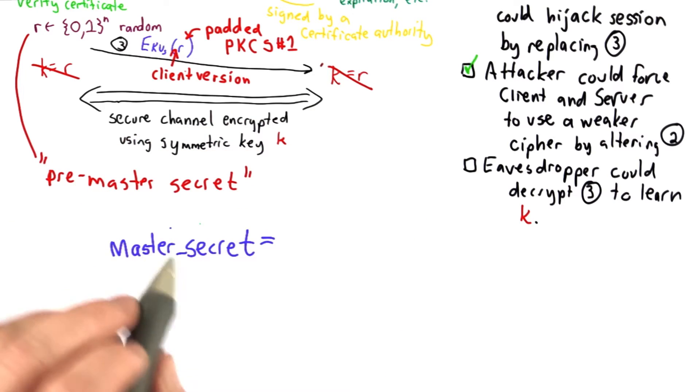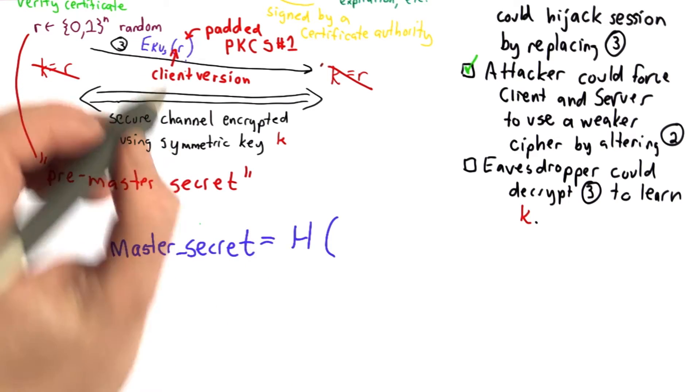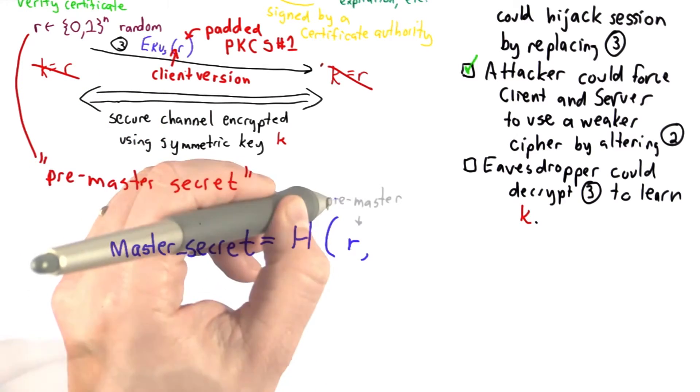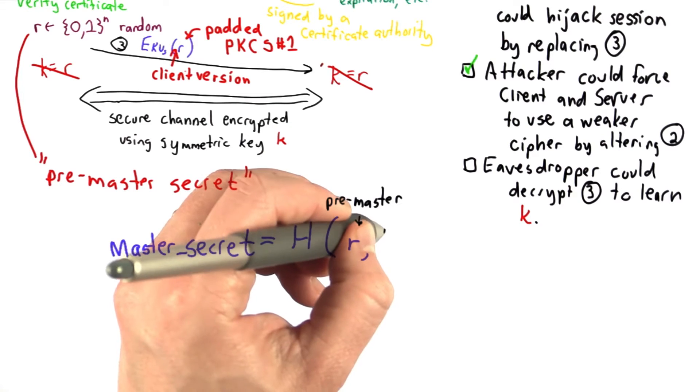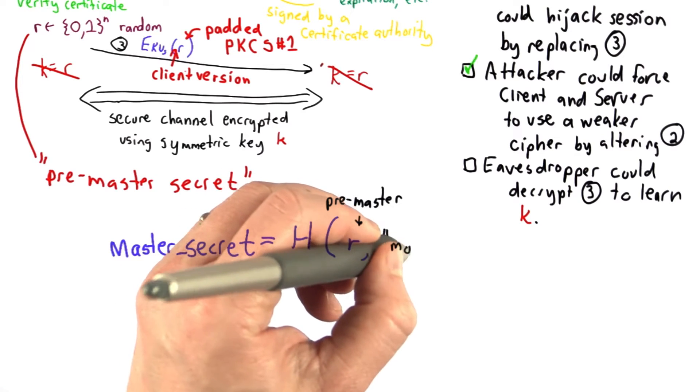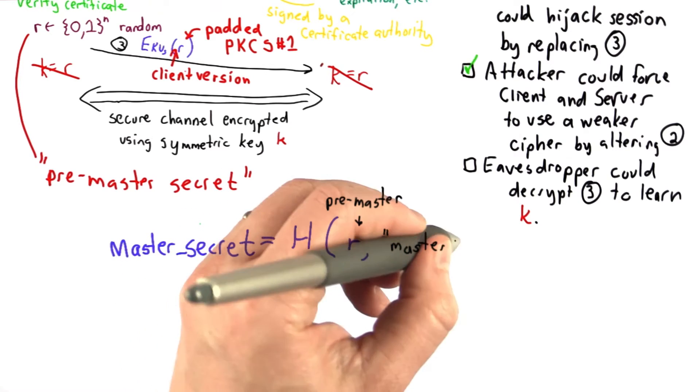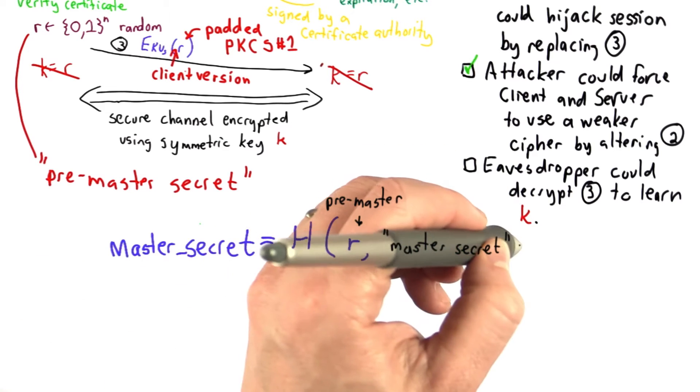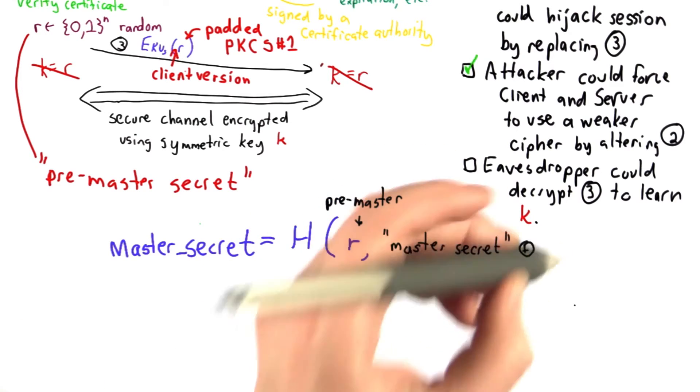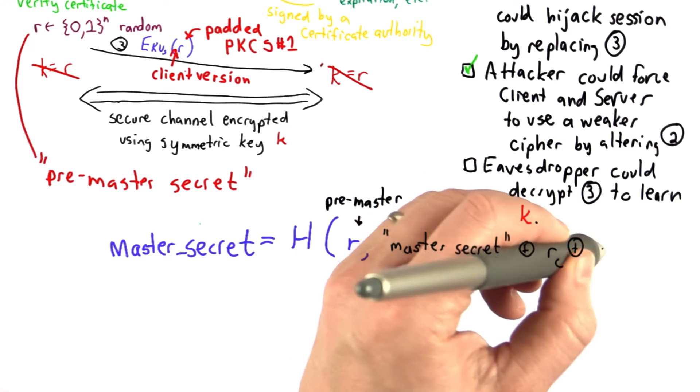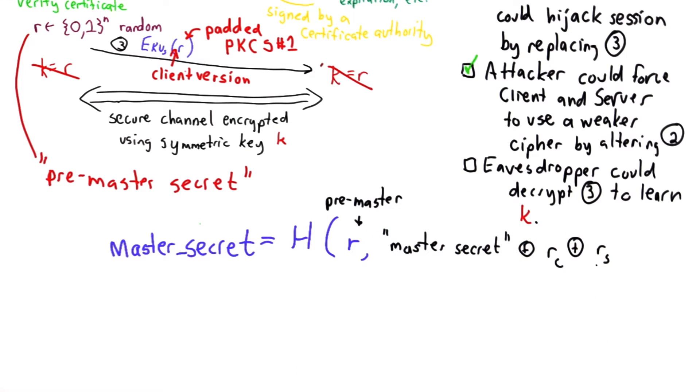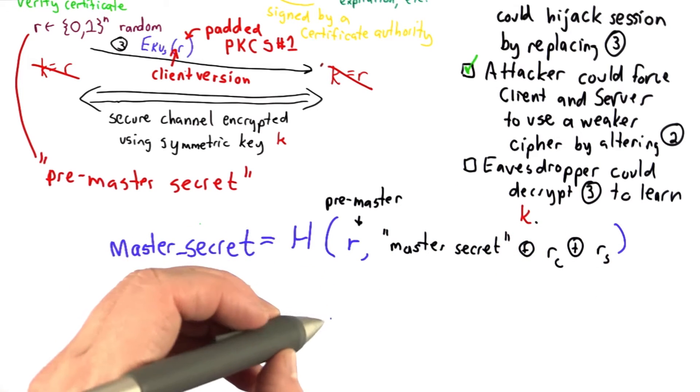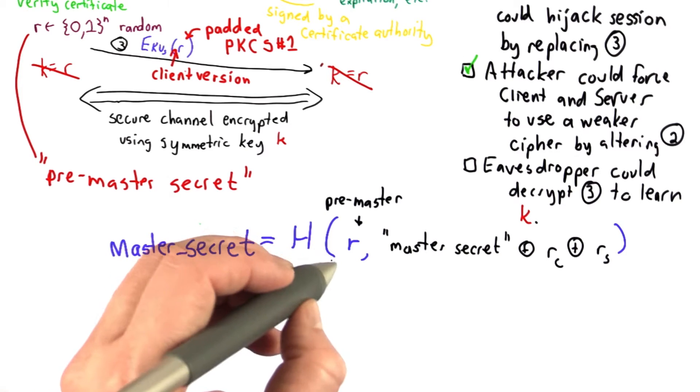This is like a hash function, where what it takes as inputs are the pre-master secret, that's r. And it also takes a label, which is just identifying this as the master secret, which gets combined with the value of rc, the client's randomness, and the value of rs, the server's randomness. And what h is is a way of using a combination of hash functions where it takes a key as well as the value that you're hashing.